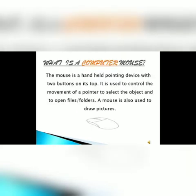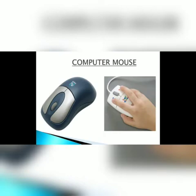What is a computer mouse? A mouse is a handheld pointing device with two buttons on its top. It is used to control the movement of a pointer, to select objects, and to open files or folders. A mouse is also used to draw pictures.